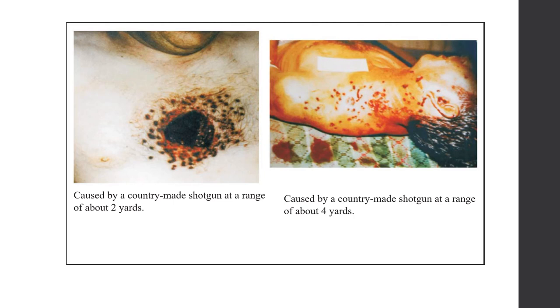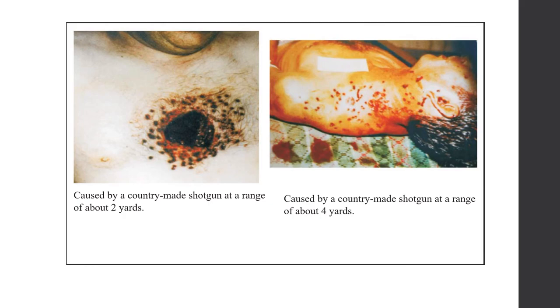Comparing standard and country-made shotgun wounds: at 2 yards, a standard firearm creates a single round hole, while a country-made firearm creates a round hole plus rat-hole-type damage with satellite pellets, resembling a 4-yard injury even when fired from 2 yards. This concludes the topic of wound ballistics. Thank you for watching.